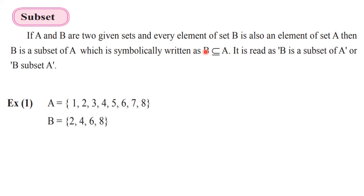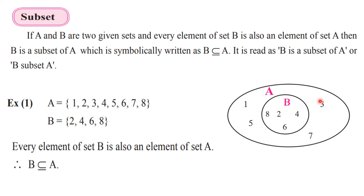Symbolically, we write the smaller set first, then the subset symbol, then the bigger set: B is a subset of A. Please take note that A is not a subset of B — the smaller set is a subset of the bigger set. We read it as 'B is a subset of A' or simply 'B subset A.' If we represent it by Venn diagram, a bigger shape shows set A and B is completely inside that. B is a subset of A.